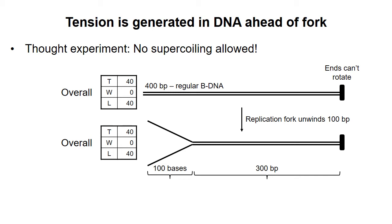But because one section is completely unwound, the twist is not evenly distributed along the length of this section. For this unwound stretch of 100 bases, the two strands don't cross each other at all. So T, W, and L all equal zero for the unwound stretch.